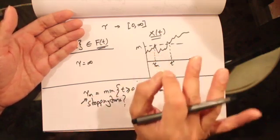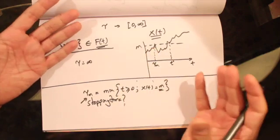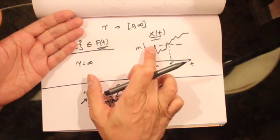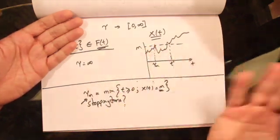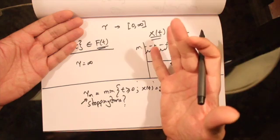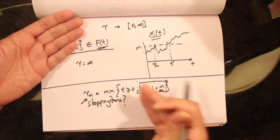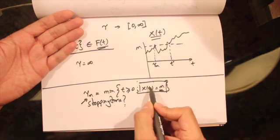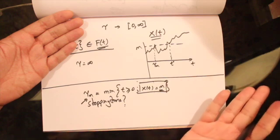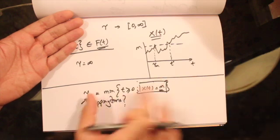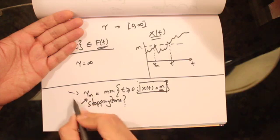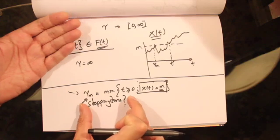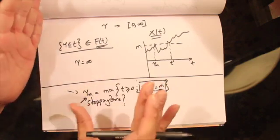To summarize: we define first passage time tau_M as the first time the stock reaches level M. This is a stopping time because to stop the process at level M we don't need to look into the future — our simple logic is the moment we reach level M we stop, and that information is available at time t. So tau_M is first passage time, and first passage time is also a stopping time.